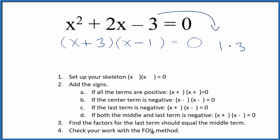And we can check our work here with the FOIL method. So we do our first term, x times x is x squared. Our outside terms, x times negative 1, that's just negative x.